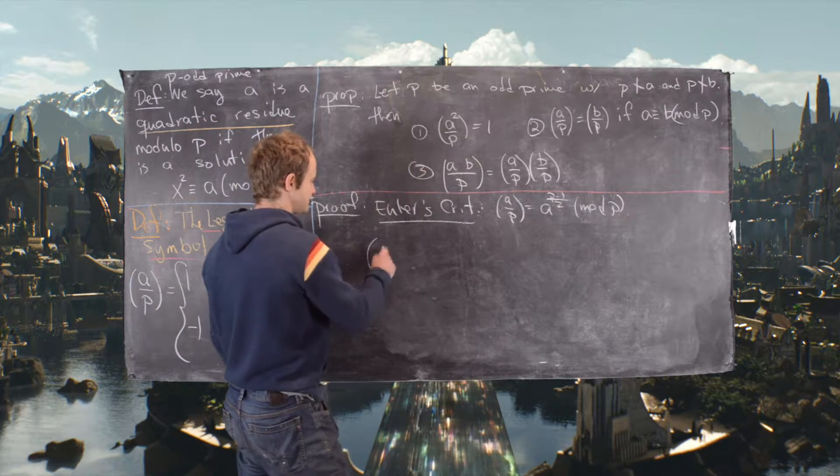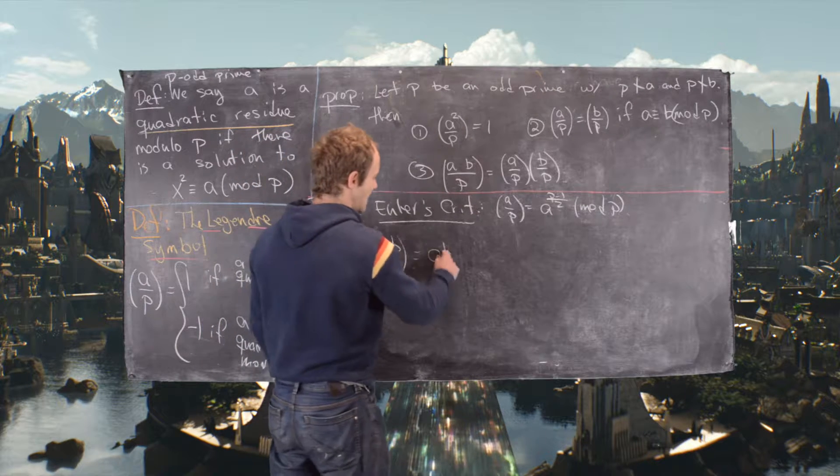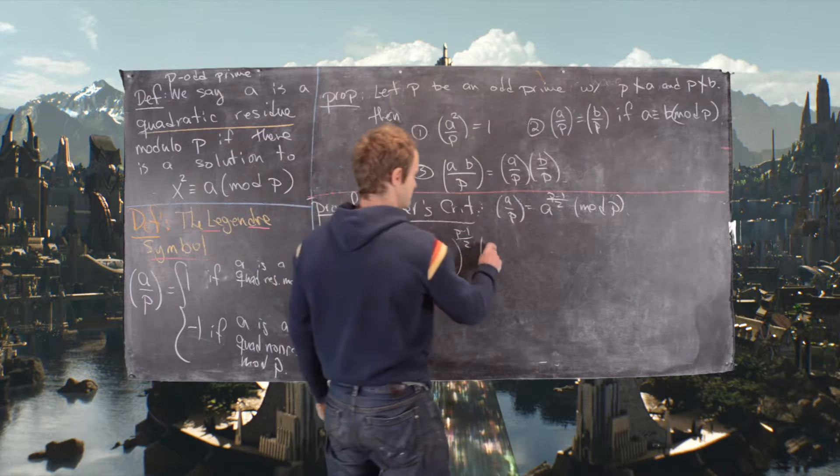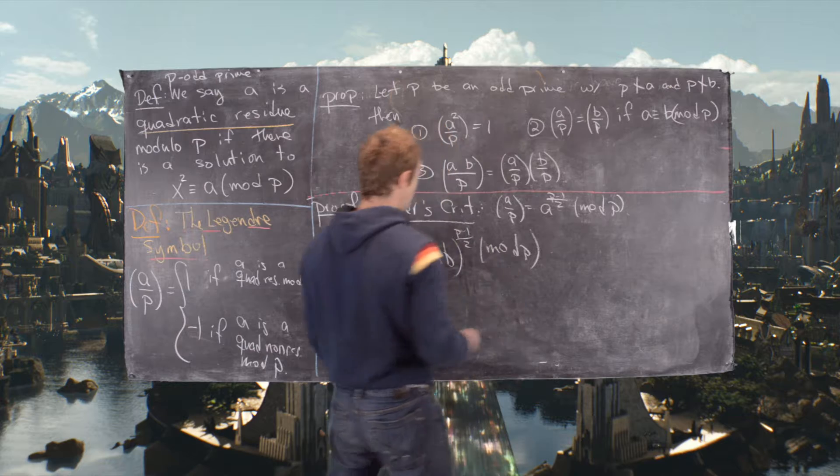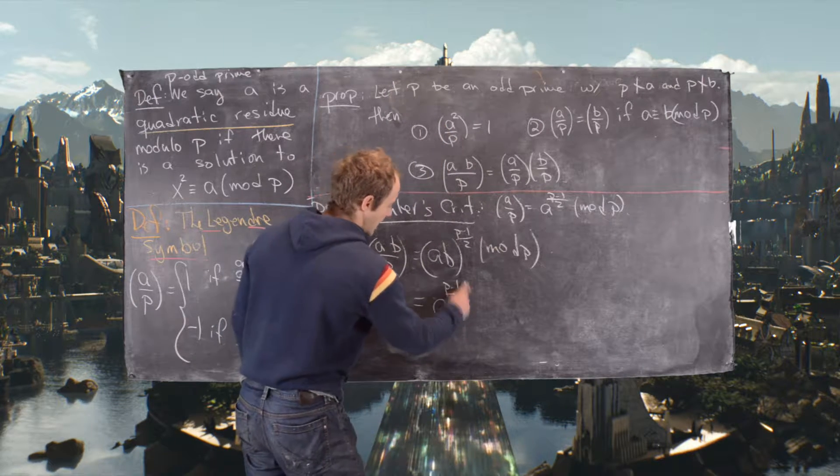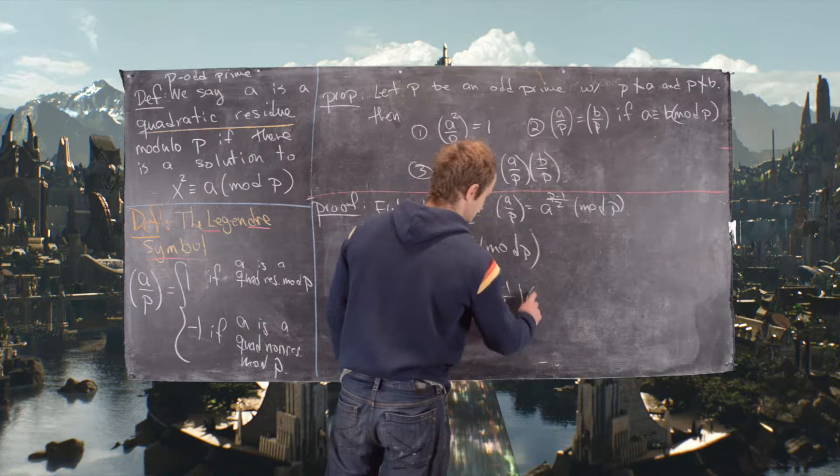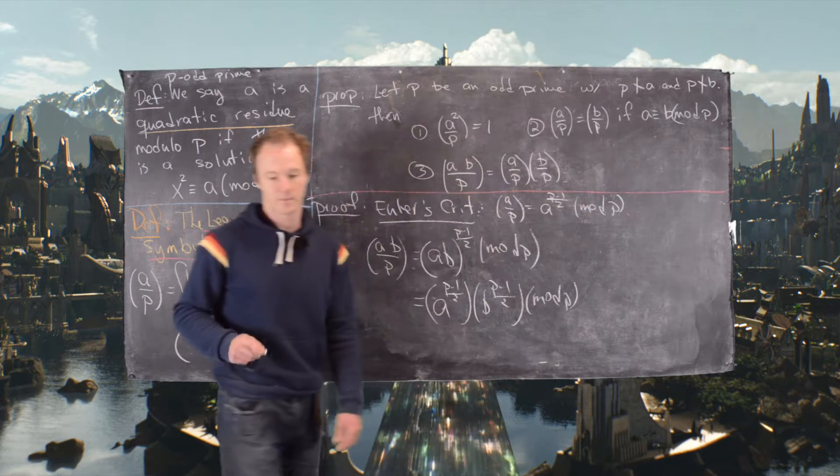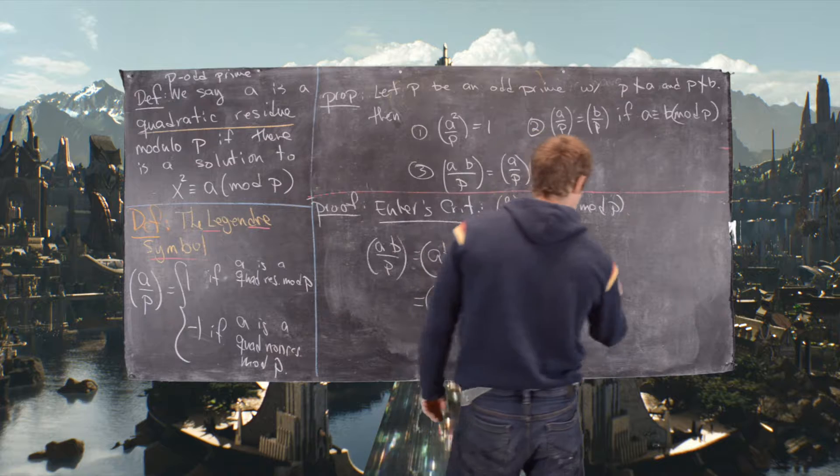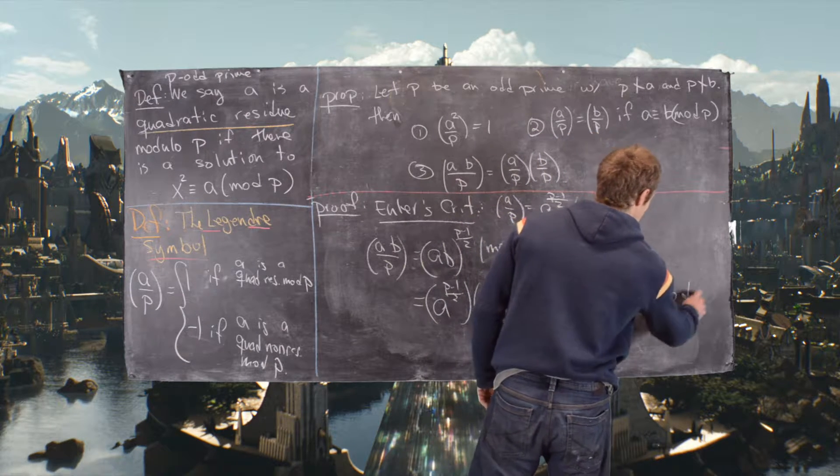And that'll actually make this calculation fairly easy. So let's look at a b by p. That's going to be a b to the p minus 1 over 2 mod p. But then by exponent rules, that gives us a to the p minus 1 over 2 times b to the p minus 1 over 2 mod p. That is congruent to a by p, b by p mod p.